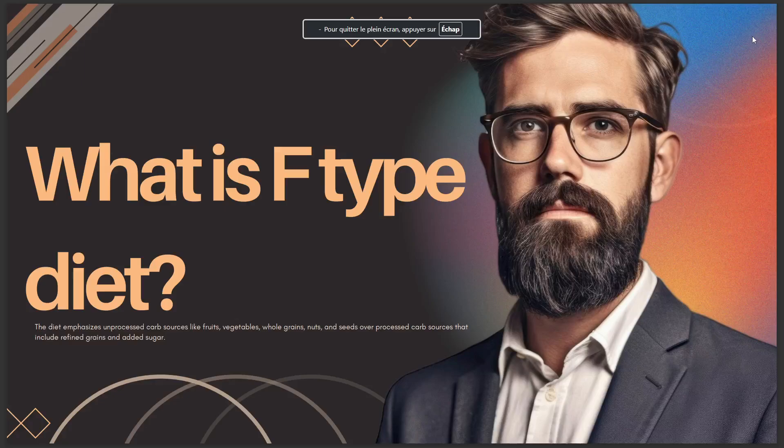Hello guys, in today's video I'll talk about what is the F-type diet. This diet emphasizes unprocessed carb sources like fruits, vegetables, whole grains, nuts, and seeds over processed carb sources that include refined grains and added sugar. So that's for today, and see you in the next video.